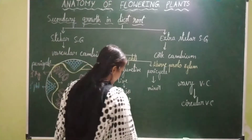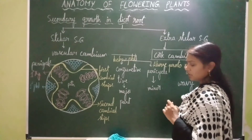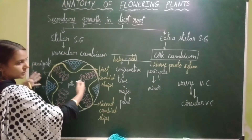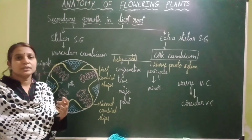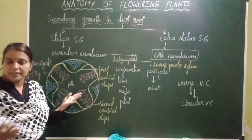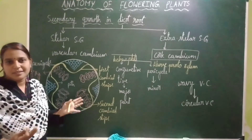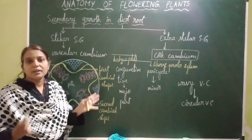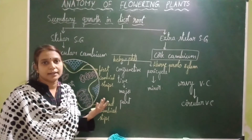Now let's study extra stelar secondary growth, which occurs by the activity of cork cambium. As more secondary xylem forms inward, pressure builds up towards the peripheral tissues, causing them to get crushed and break down. To replace these peripheral tissues, an extra stelar vascular cambium — called cork cambium — is formed outside the stele, and its activity replaces the peripheral tissues. This growth is called extra stelar secondary growth.